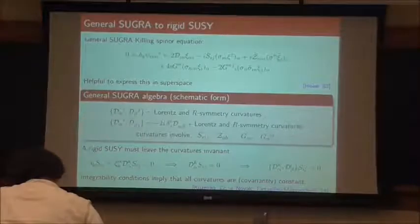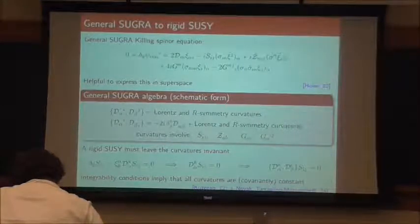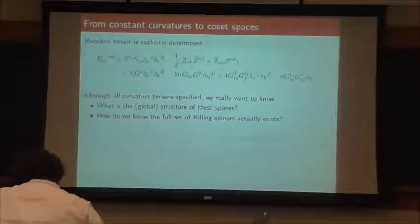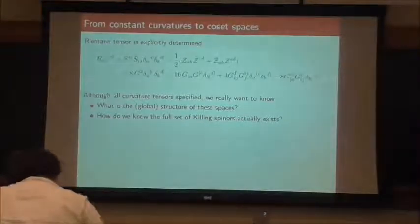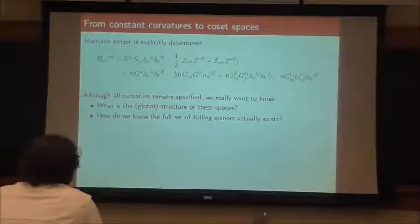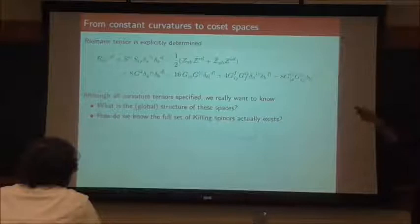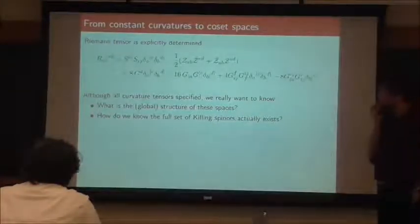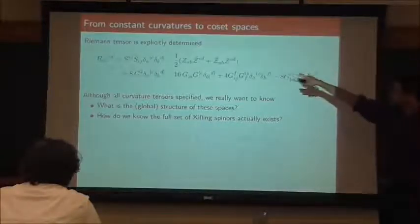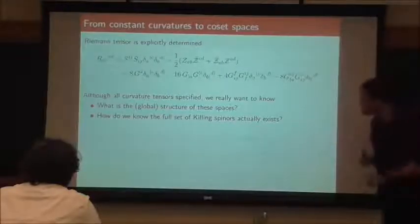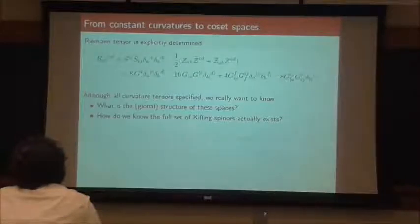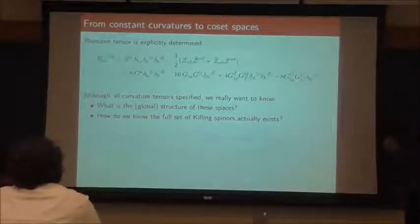I should mention this was first noticed in superspace by Sergei Kuzenko a few years ago, and then he exploited it with Jessica Lama and Gabriel Tartaglino-Mazzucchelli in five dimensions. So what can you do with this? You have this algebra at the spinor-spinor level, and you can crank through and work out the entire Riemann tensor by solving the superspace Bianchi identities. It's bilinears in all of these objects. In principle, you have the curvature tensor, and you have a bunch of algebraic conditions telling you certain objects can be turned on when certain other objects are turned off.